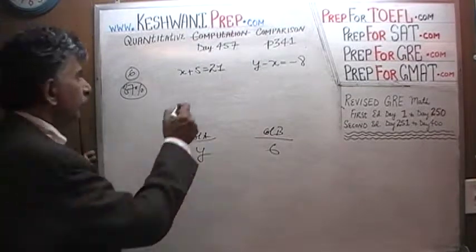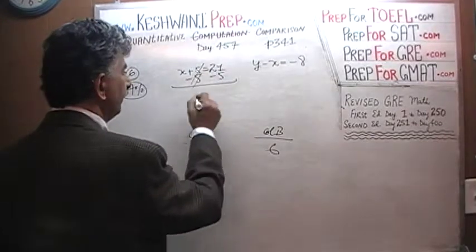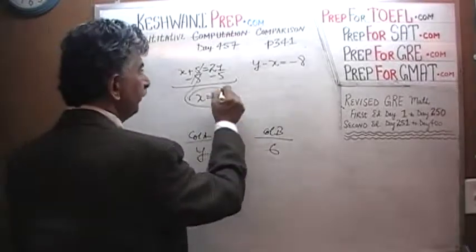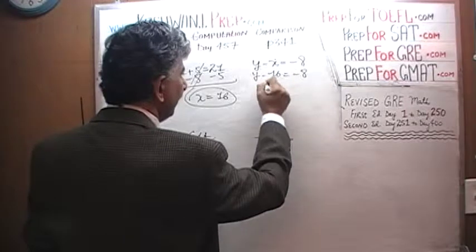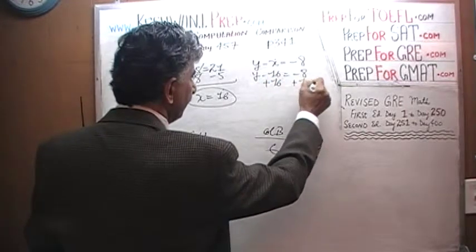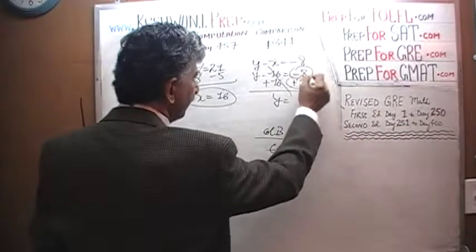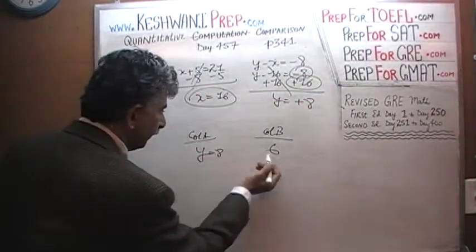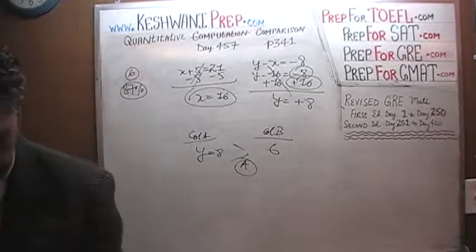Here we go. Subtract 5 from both sides. If we subtract 5 from both sides of the equation, we can find that x equals 16. Once we find out that x equals 16, put it in this equation here. So y minus 16 equals negative 8. Add 16 to both sides, and 16 goes away. And we find that y equals negative 8 plus 16, which is positive 8. So y equals 8 versus 6. The answer is A.